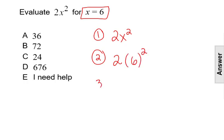Step 3 is to simplify. Using our order of operations, think of PEMDAS, we're going to evaluate the exponent. So 6 squared, or 6 to the second, is 36. And then 2 times 36 is 72.